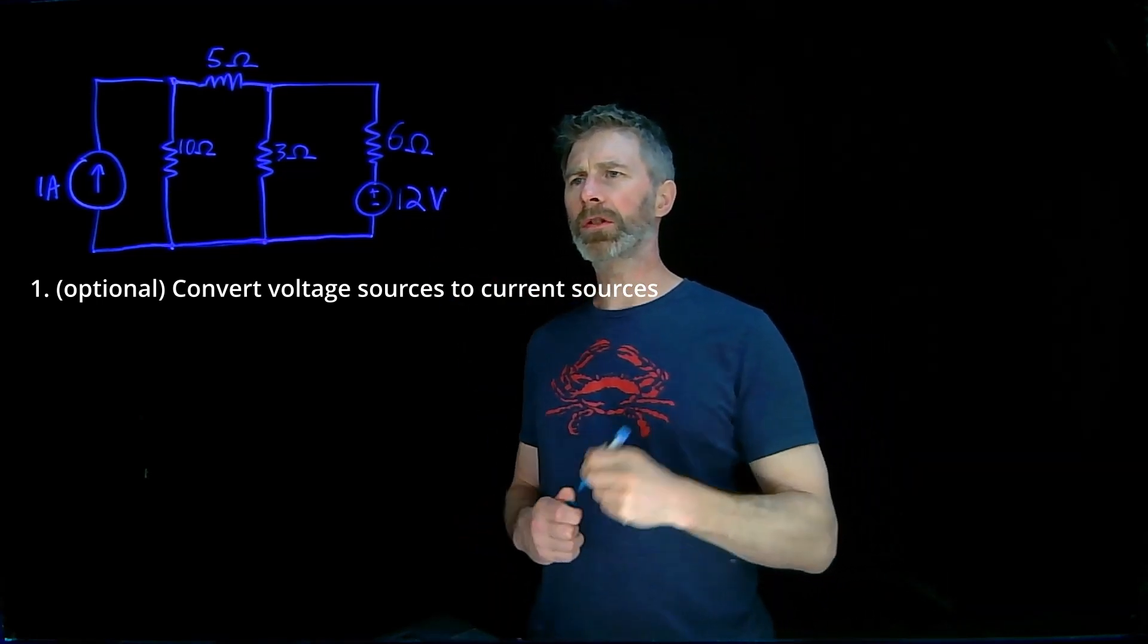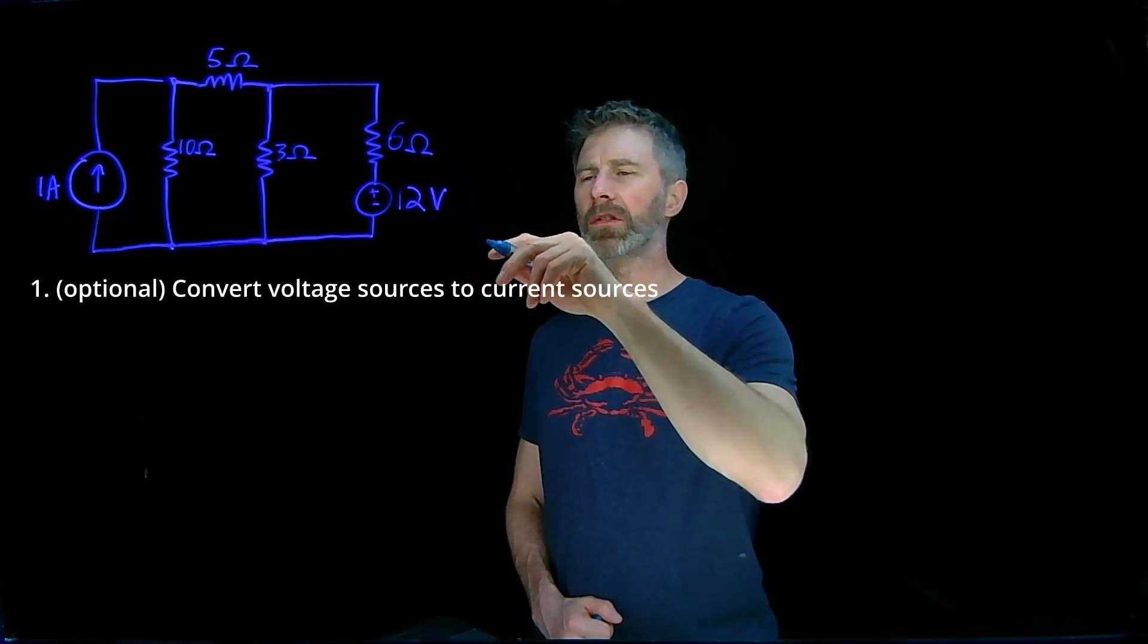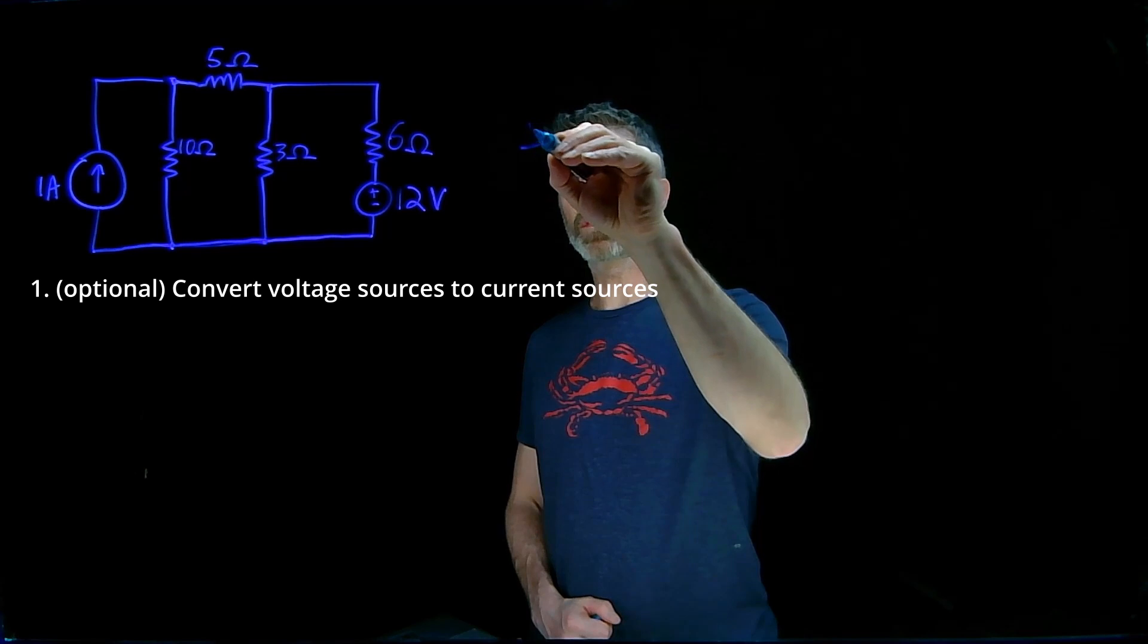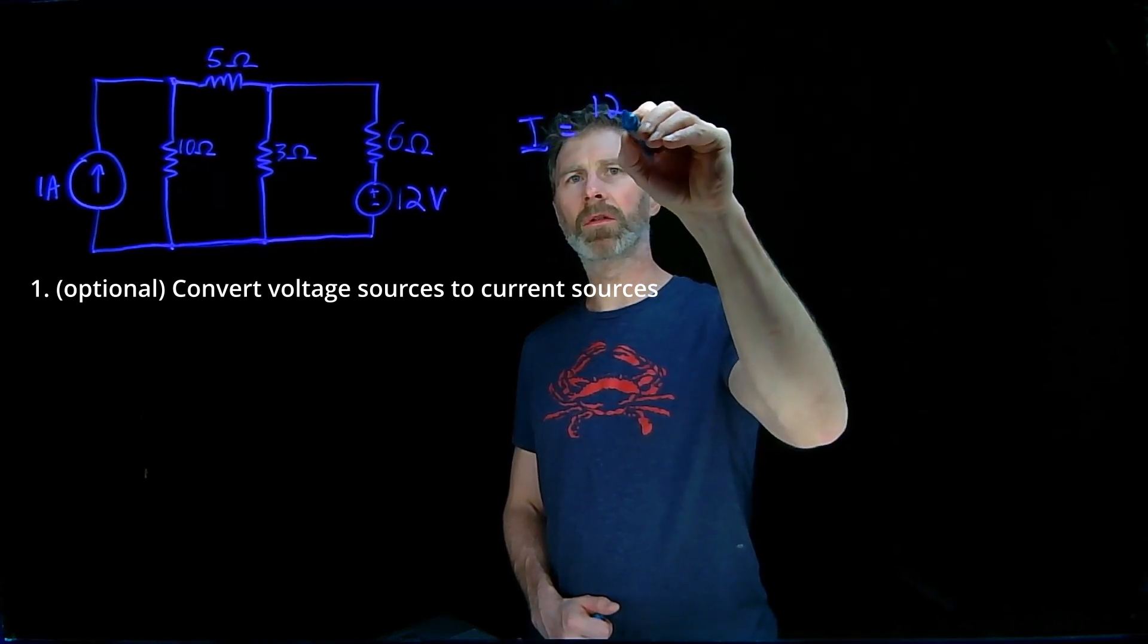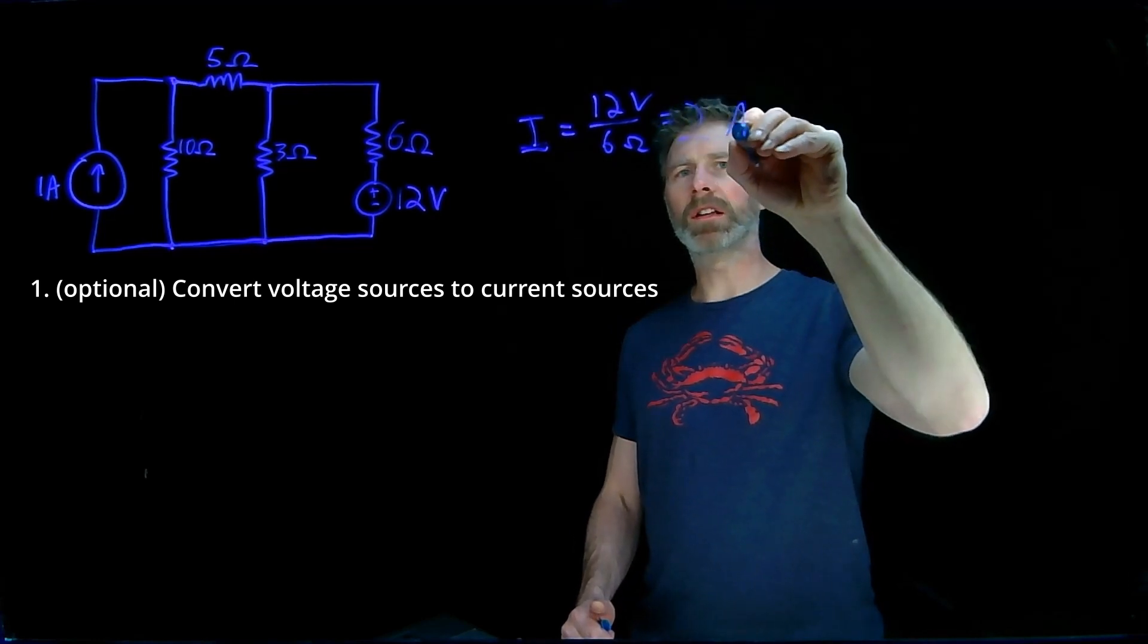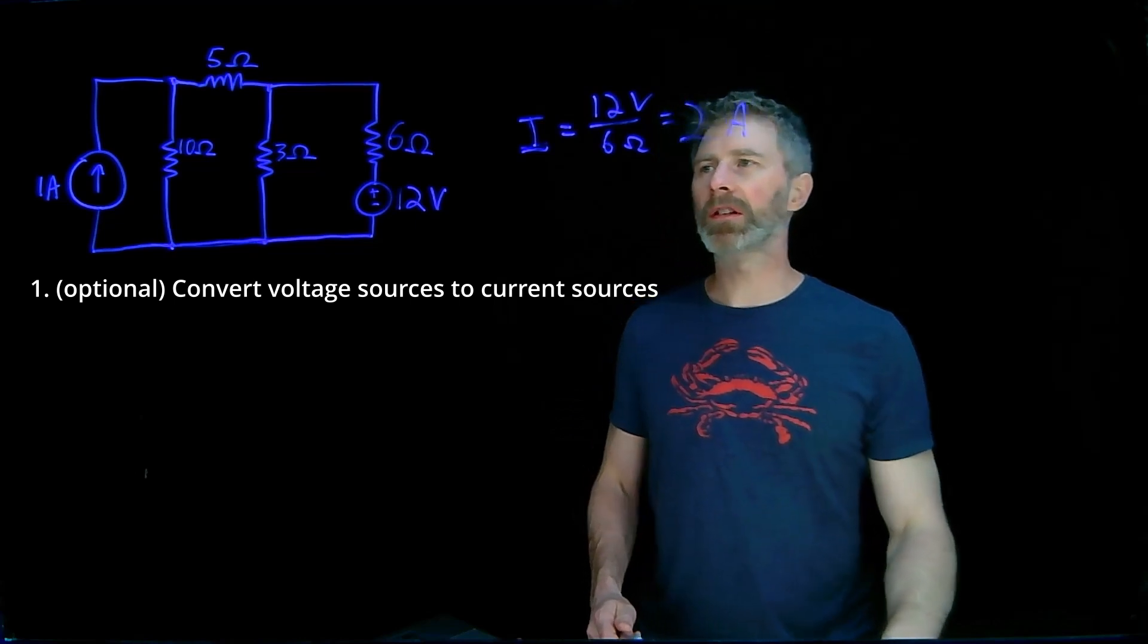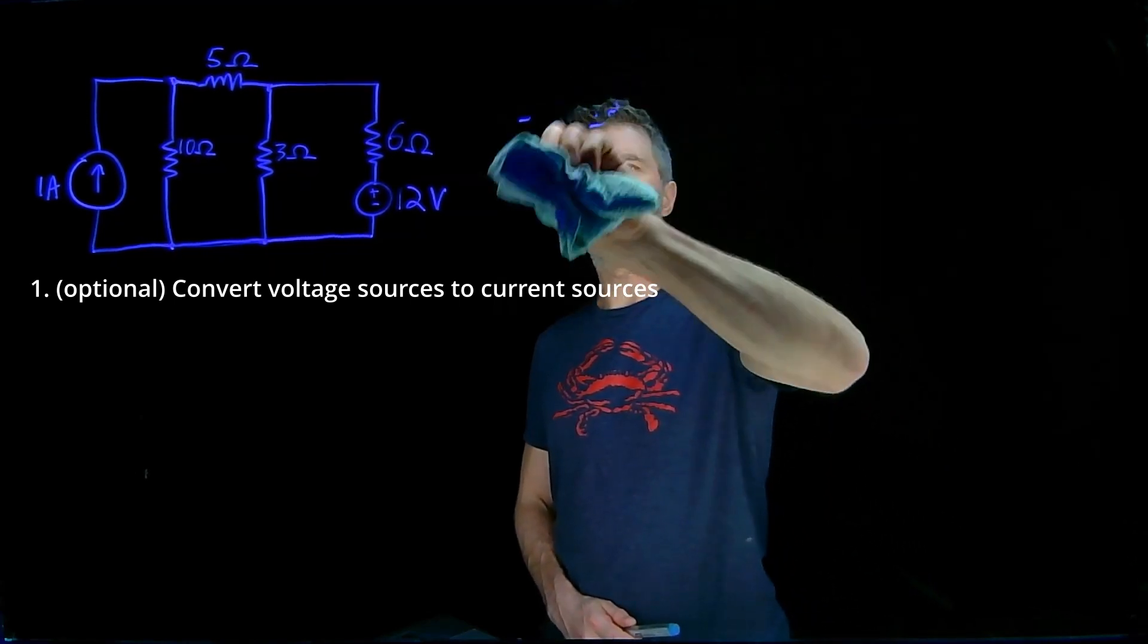If we have a 12 volt source and a 6 ohm output resistance, the equivalent current source will be 12 volts over 6 ohms. It is a 2 amp source. We use the same resistance, so it's going to be a 6 ohm resistor in parallel with it.